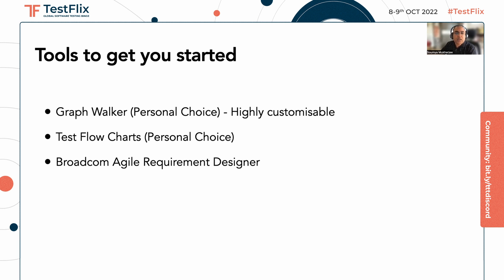The third one is the Broadcom Agile Requirement Designer. It is an absolutely excellent tool — you can spit out your native test cases like your steps, or you can also generate feature files out of the models in the Agile Requirement Designer. There are multiple other tools in the market, but personally I don't use them because they are quite bulky — they take a lot of RAM and when creating models, they are very compute intensive. In my opinion, model-based testing tools should be very, very light.